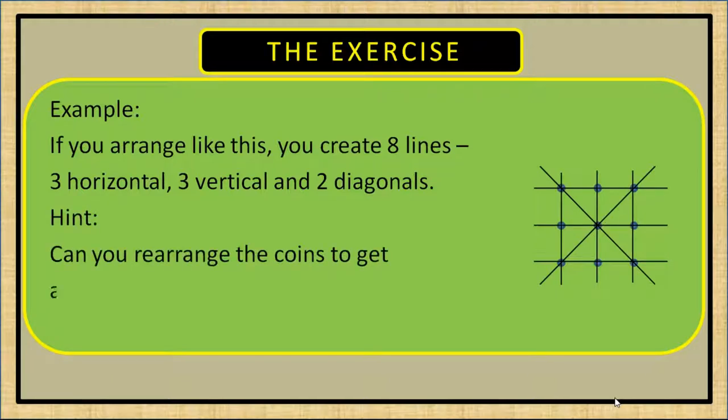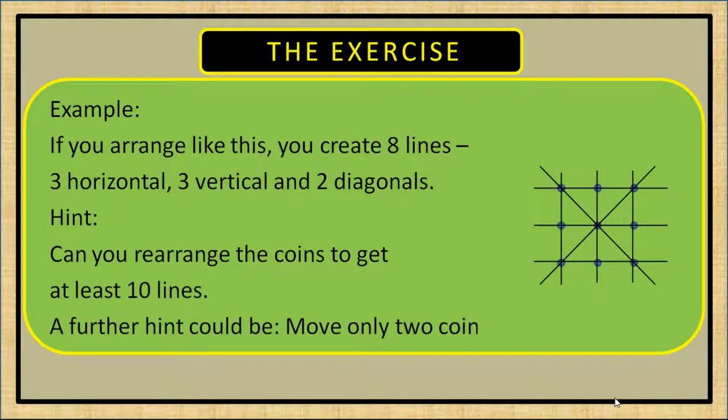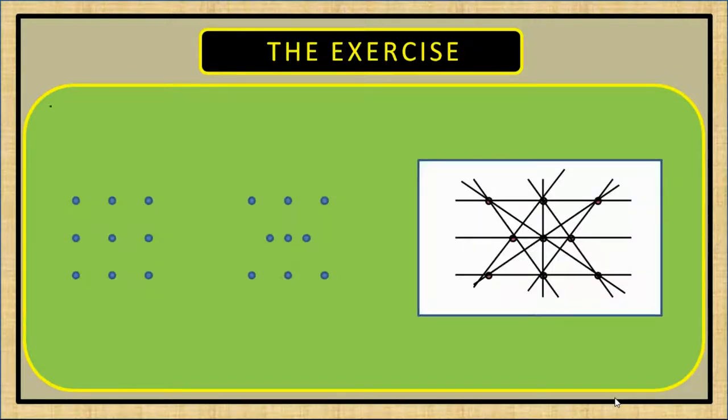A further hint could be: move only two coins. The solution is shown. We have removed two vertical lines but have created six diagonals instead of only two.